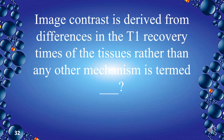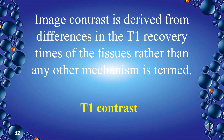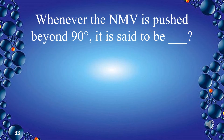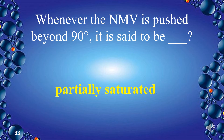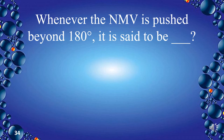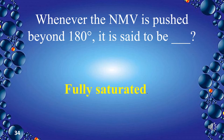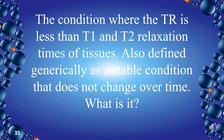Image contrast derived from differences in T1 recovery times of tissues is termed T1 contrast. Whenever the NMV is pushed beyond 90 degrees, it is said to be partially saturated. Whenever the NMV is pushed beyond 180 degrees, it is called fully saturated. The condition where TR is less than T1 and T2 relaxation times — a stable condition that does not change over time — is defined as steady state.